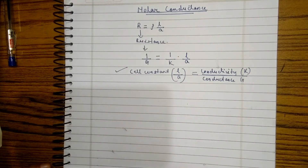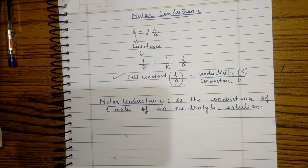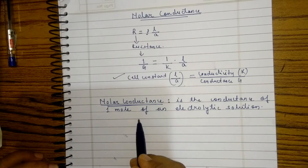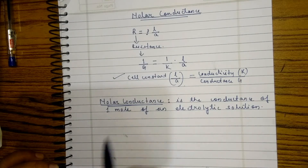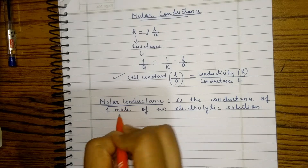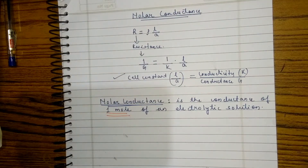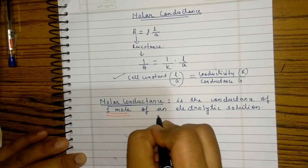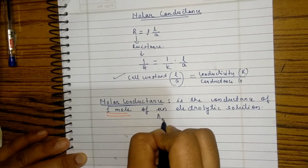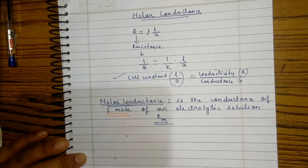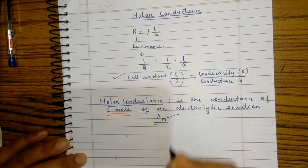What do we mean by the molar conductance of a solution? We can define molar conductance as the conductance of one mole of an electrolytic solution. The molar conductance is represented by the symbol lambda m (or kappa m).